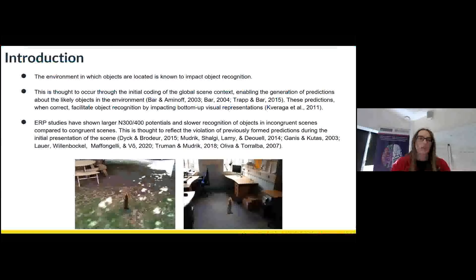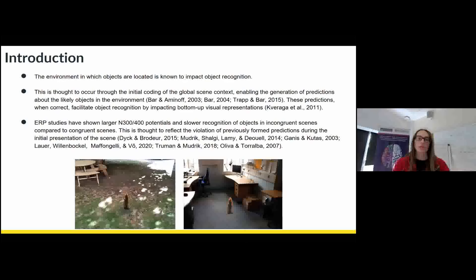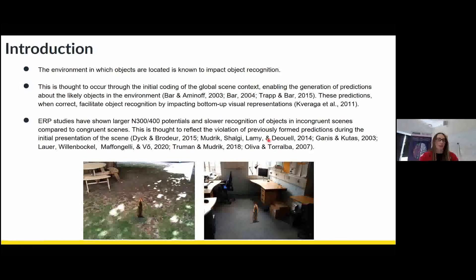So to give you a bit of background, we know that the environment in which objects are located can impact our ability to recognize these objects. So when you're walking around an environment such as this outdoor environment here, you start making predictions about what kind of objects could appear in the environment. So you might predict to see things like plants, like trees, you might predict to see a bench like this one, or animals like this beaver here.